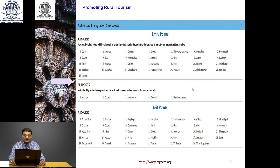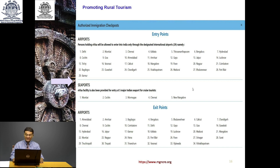Seaports for entry: Mumbai, Cochin, Marmagoa (Goa), Chennai and New Mangalore. Exit point airports include the same list plus additional airports: Patna, Srinagar, Surat, Tiruchirapalli, Tirupati, Thiruvananthapuram, Varanasi, Vijayawada and Visakhapatnam. Land ICPs include Attari Road Punjab, Akhavra, Banbasa, Changarabandha, Dalu, Dawki, Dhali Ghat, Gauri Phanta, Goja Danga, Haridaspur, Hili, Jaigaon, Jogbani, Karimganj, Khowai, Radhikapur, Raxaul, Raniganj, Rupaidia, Sabroom, Sonauli, Srimantapur, Sutarkhandi, Phulbari, Zorinpui and Zokhawthar. These are the places where you can exit from the country.